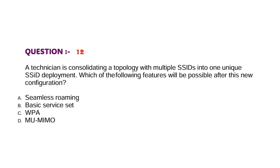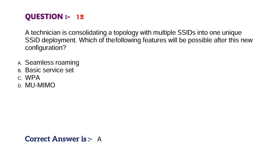Question: A technician is consolidating a topology with multiple SSIDs into one unique SSID deployment. Which of the following features will be possible after this new configuration? Option A, seamless roaming. Option B, basic service set. Option C, WPA. Option D, MU-MIMO. Correct answer is Option A.